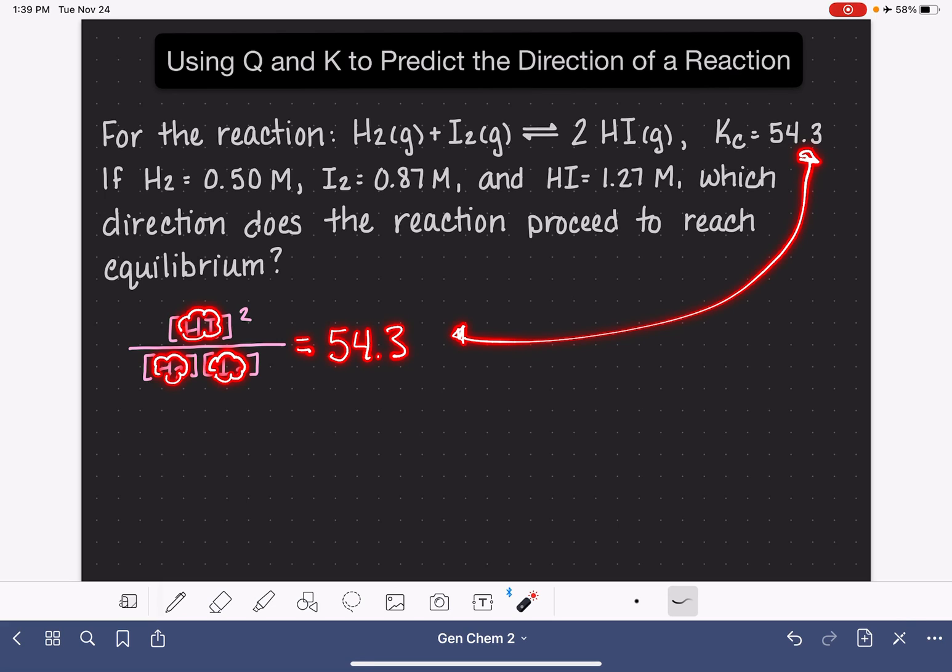That's what it means mathematically for this to be in equilibrium. If this is not in equilibrium, when we plug these numbers in, we're going to get something other than 54.3. Maybe it's bigger, maybe it's smaller. In general, it's going to be a different number.